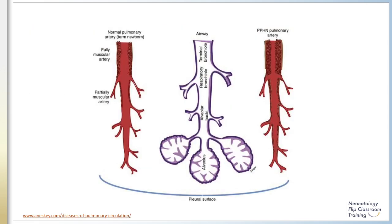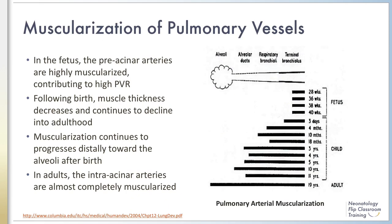In this figure, progression of normal muscularization of the pre-acinar and intra-acinar arteries is shown on the left. However, on the right, there is aberrant extension of muscularization distally toward the alveoli. This abnormal vascular muscularization that occurs distally toward the alveolus can occur in the setting of hypoxia and is proposed to contribute to the development and severity of pulmonary hypertension.